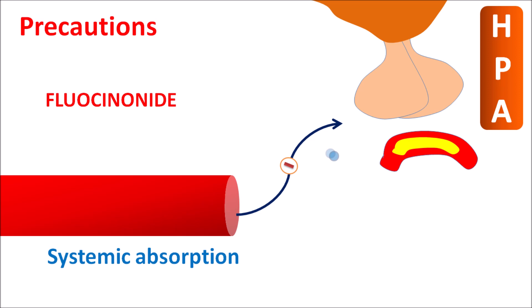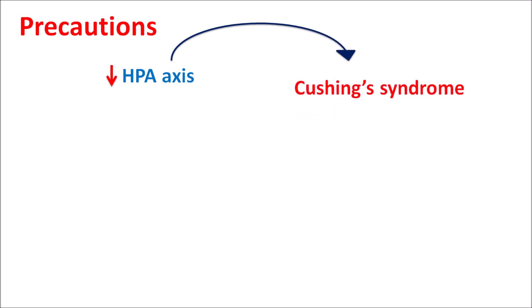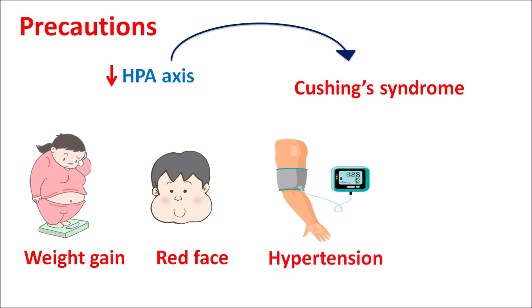With toxic doses of fluocinonide, it can suppress the HPA axis leading to many symptoms similar to Cushing syndrome. By suppression of the HPA axis, fluocinonide can produce Cushing syndrome with symptoms like increased weight gain, red face and moon face, hypertension, increased blood pressure, and increased glucose levels resulting in hyperglycemia. Within children, suppression of the HPA axis may lead to mental retardation and decreased growth. That's why this drug should not be given to children less than 12 years.